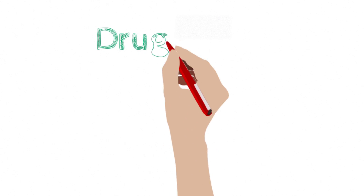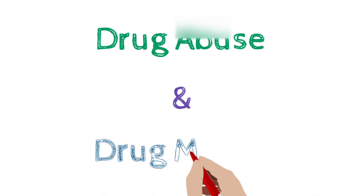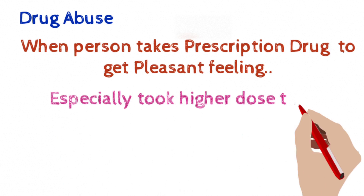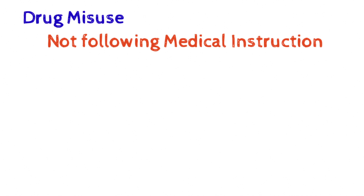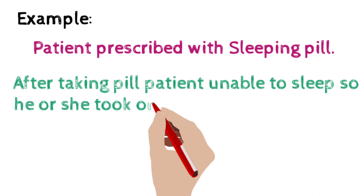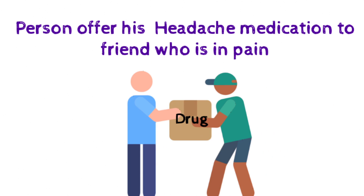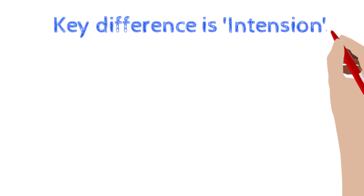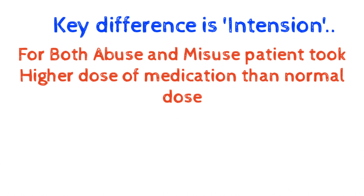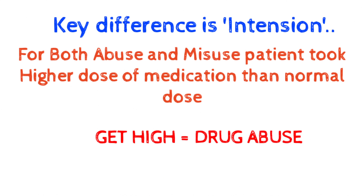Now let's move to the next confusing and most commonly asked terms in interviews: drug abuse and drug misuse. Drug abuse is when a person takes a prescription drug to get a pleasant feeling, typically taking a higher dose than prescribed, looking to get high. Drug misuse is when a person does not follow medical instructions while taking a drug — they may take a higher dose but not with the intention to get high. For example, a patient prescribed sleeping pills who, unable to sleep, takes an extra pill an hour later thinking it will do the job. Another example is a person offering their headache medication to a friend in pain. The key difference between drug abuse and drug misuse is intention: if the intention is to get high, it's drug abuse; if not, it's drug misuse.